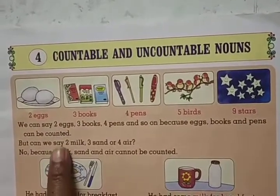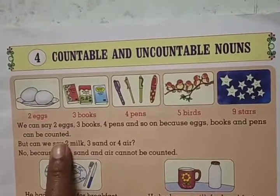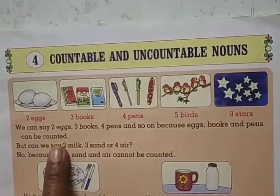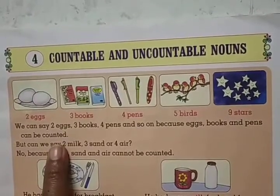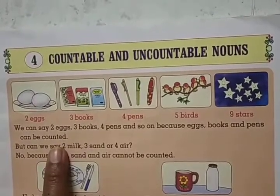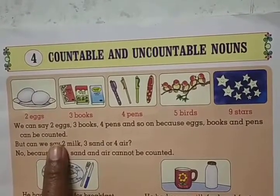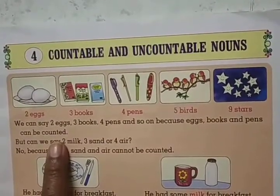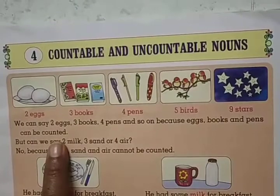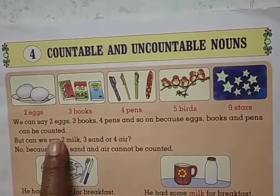Let's see here — what we can count here: 1, 2, 3, 4. We can count here. So what do we say? Countable nouns.